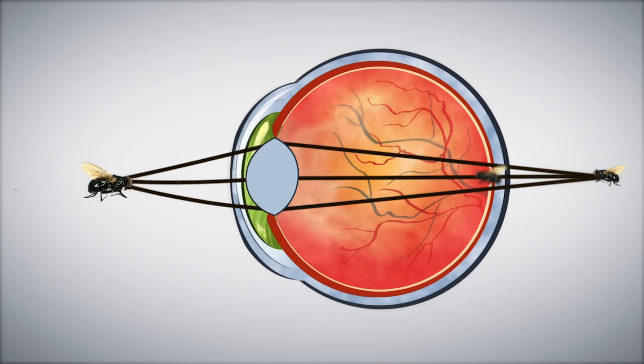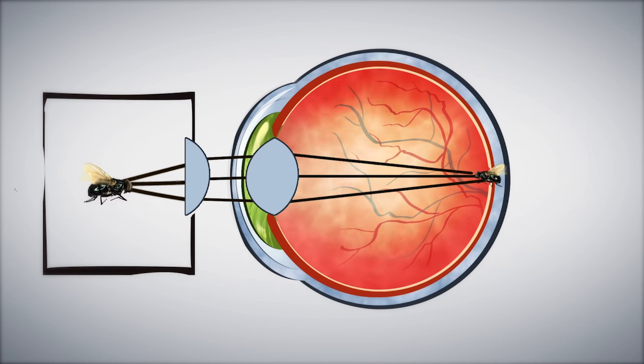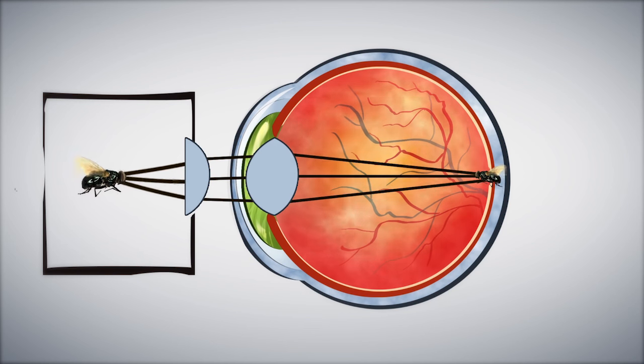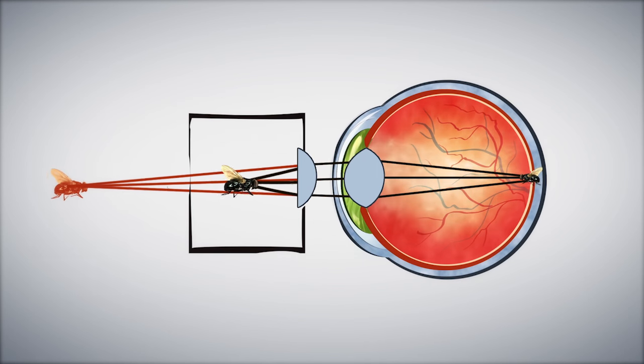This is why VR headsets need special lenses, so the angle of the light from the lenses is corrected so that it can be used by your eyes again. Because the light rays hit your lens at a different angle, you perceive the image as farther away than it really is.